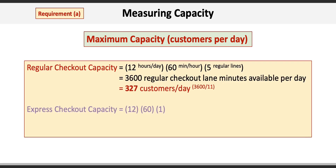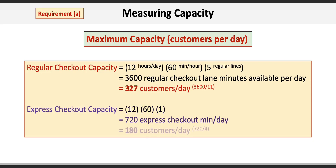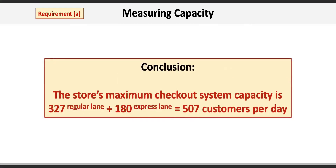Now for express lane capacity: 12 hours times 60 minutes per hour, but there's only one lane — a total of 720 express checkout minutes per day, or 180 customers after dividing by the 4-minute average express lane time. As a result, the store's maximum checkout capacity is 327 regular lane customers plus 180 express lane customers for a total of 507 customers per day.